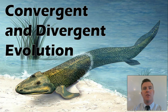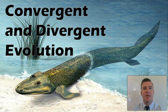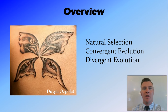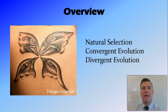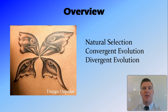In this video we're going to look at convergent and divergent evolution. We're first going to look at a brief overview of natural selection and how that accounts for evolution. Then we're going to look at the difference between convergent and divergent evolution, including some Australian examples.